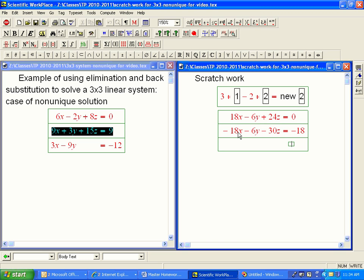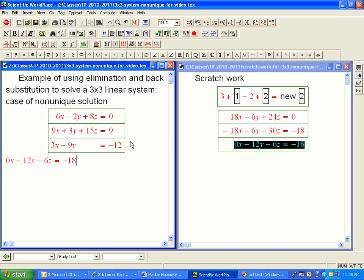And now I'm going to add those together. So I certainly get 0x, which I need to do for this to work. That's why I did it that way. Minus 12y, they don't cancel because I'm adding. Minus 6z equals minus 18. Okay, so that's the new version of equation 2.